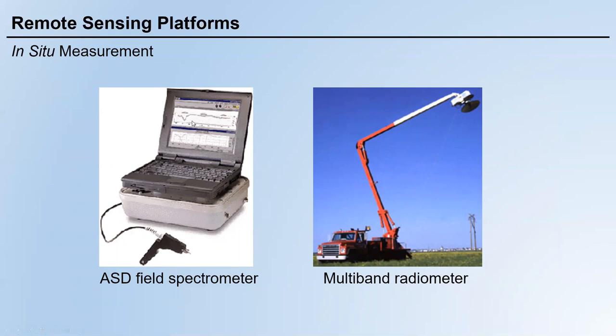Each object has a different spectrum, meaning the shape of the spectrum for each object is different — it's just like your fingerprint. Some objects may have high reflectance at the red band, low reflectance at the green band, and different reflectance at different bands. Since each object has a different combination of reflectances, the shape of the reflective spectrum differs from one object to another, so we can use this to identify different objects on the ground.